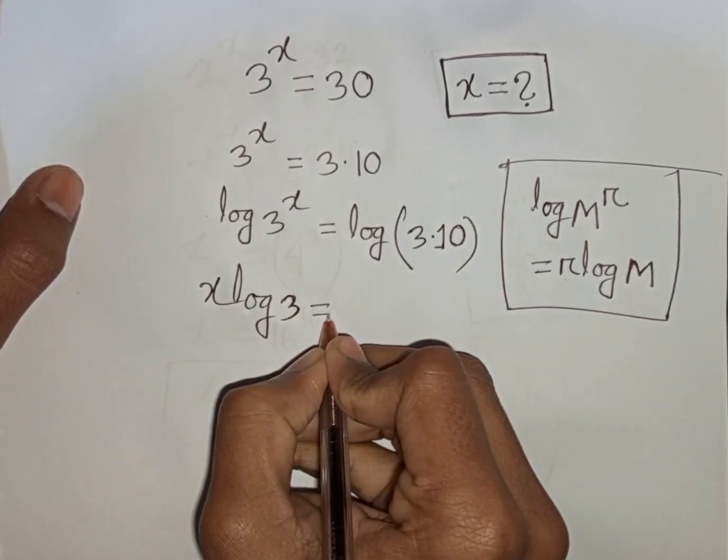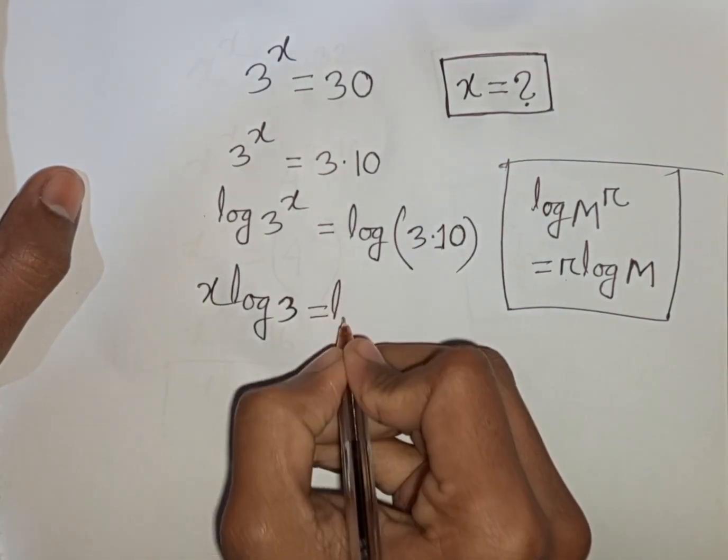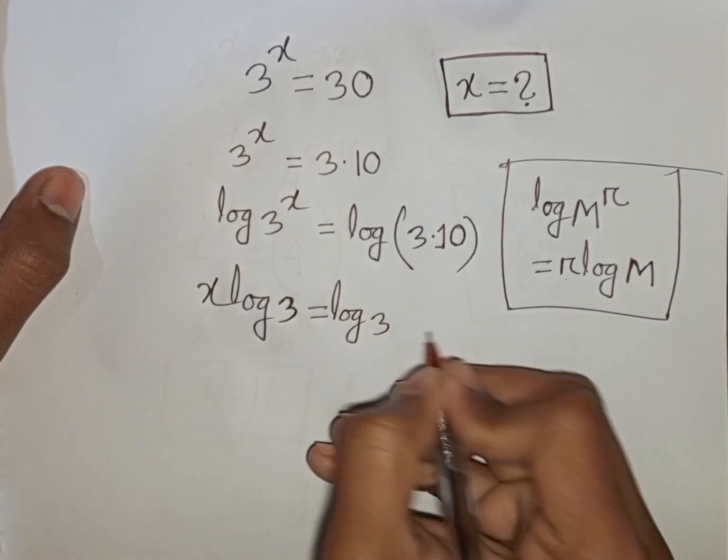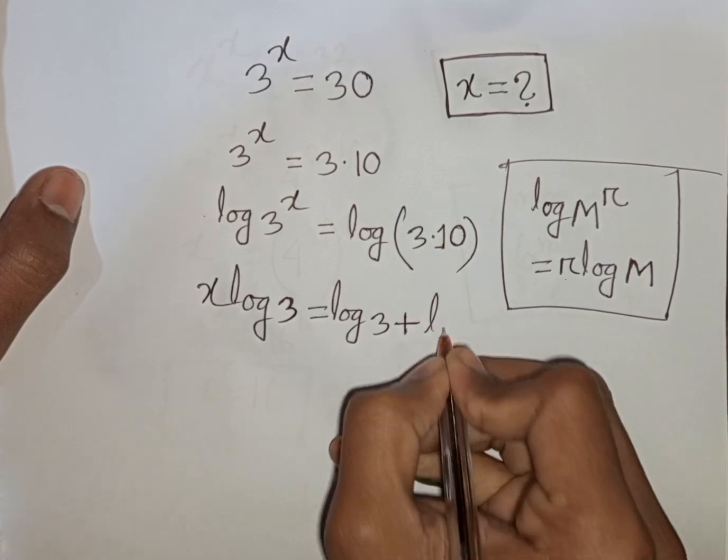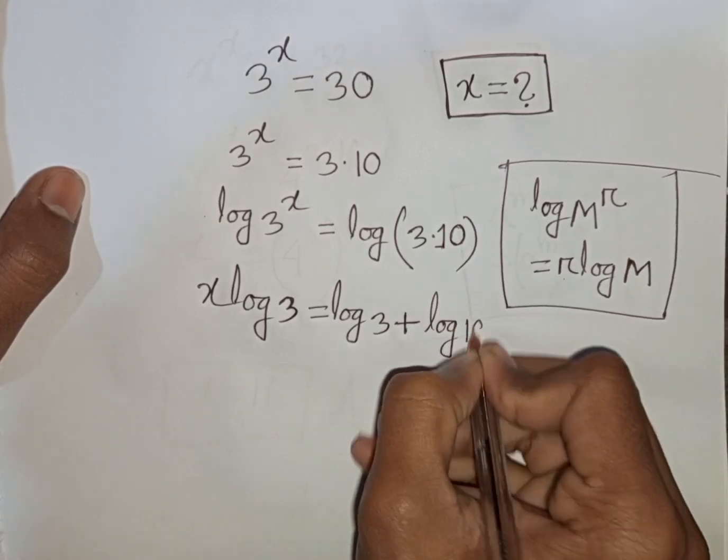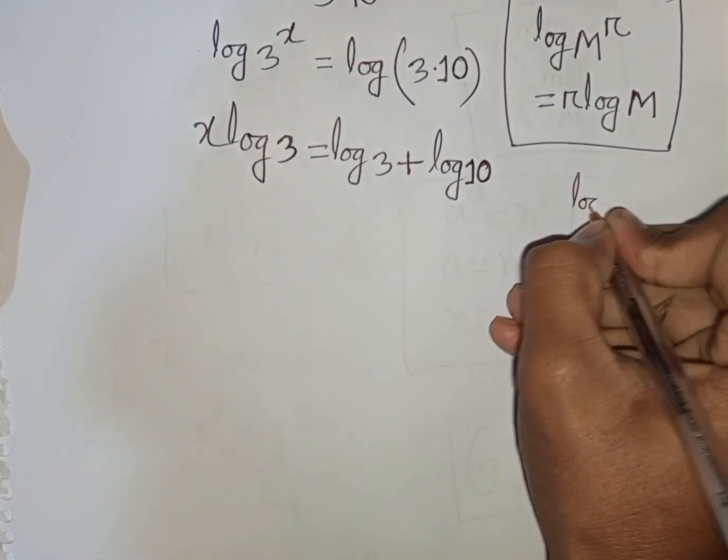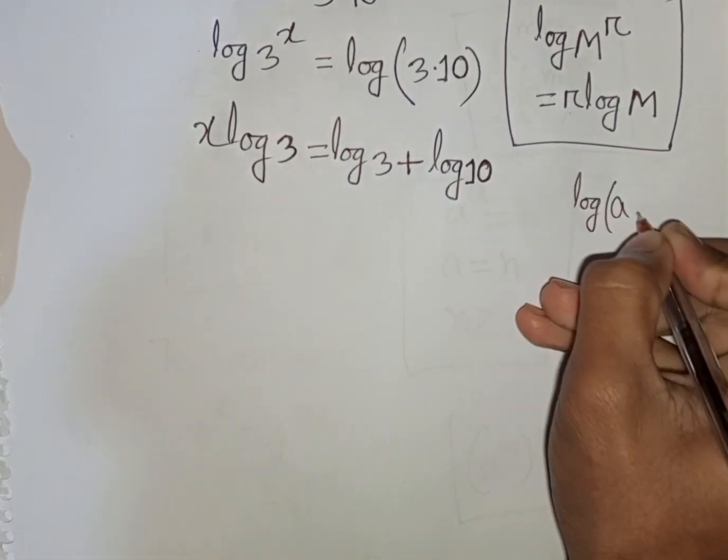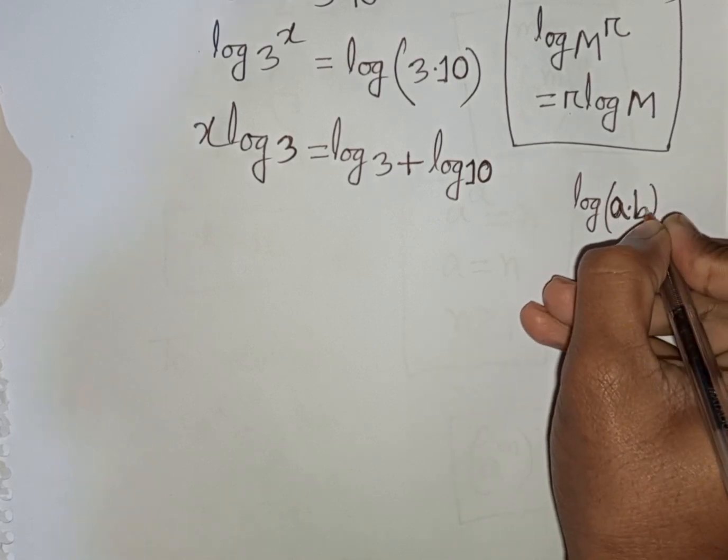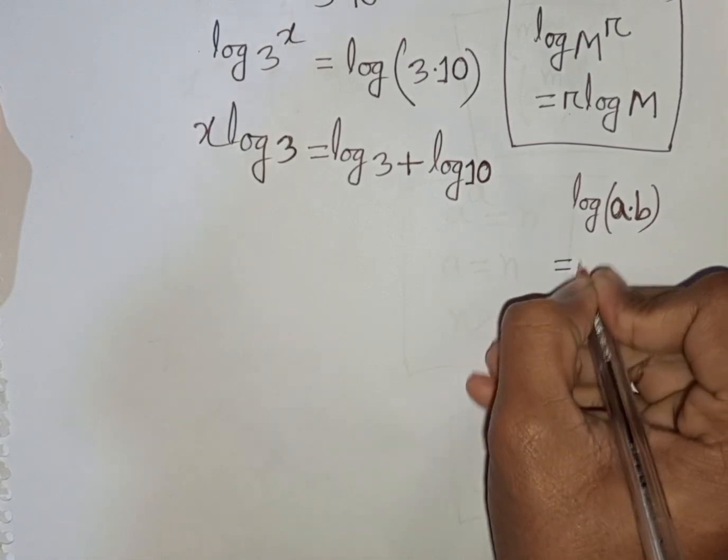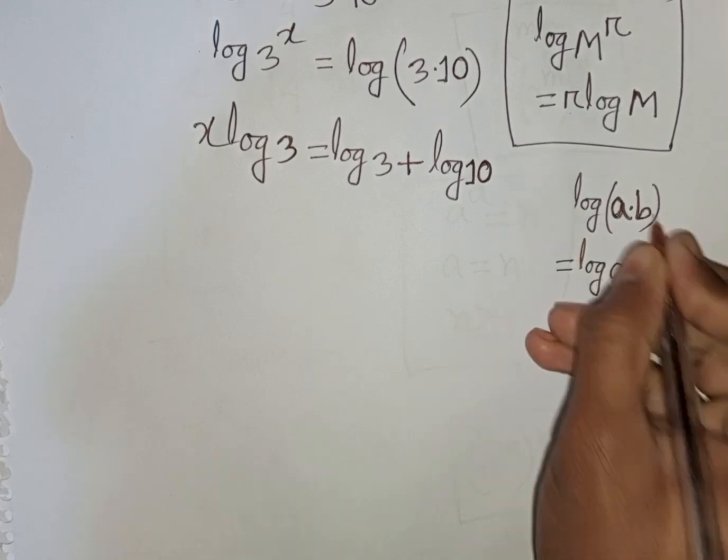It's equal to log of 3 times 10, that means it will be log 3 plus log 10 according to this formula. Log of a times b is equal to log a plus log b.